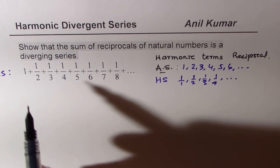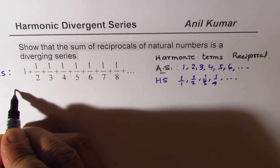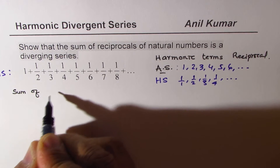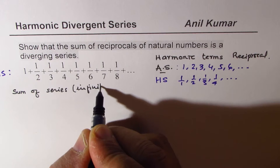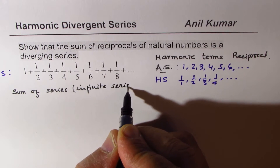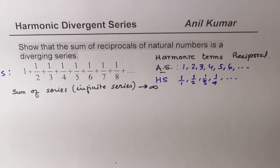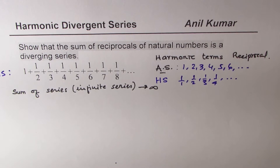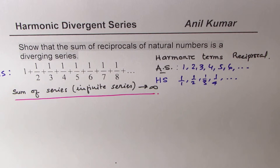How do we show that it is diverging? Diverging series means that if I find the sum of the series — since this is an infinite series — then this infinite series sum is also approaching infinity, so it is not converging to a fixed value. That's what we have to show: that the sum of the series is indefinitely increasing.